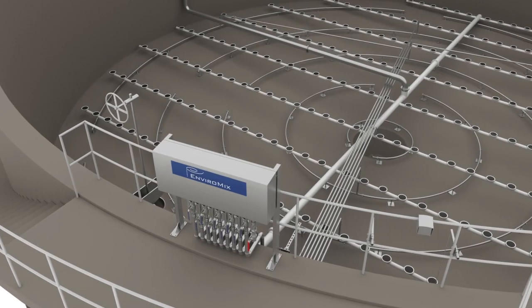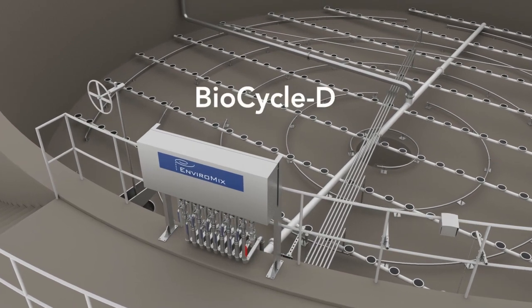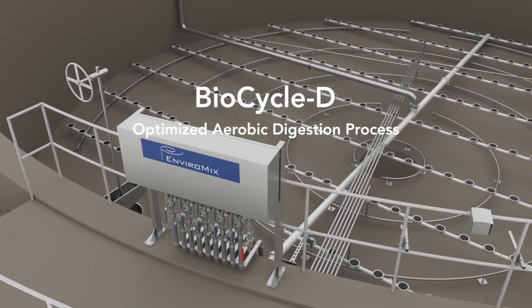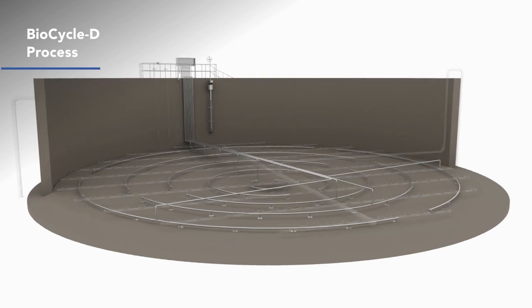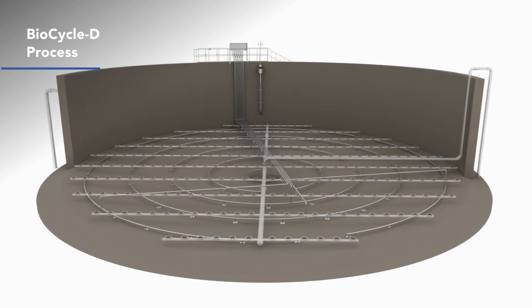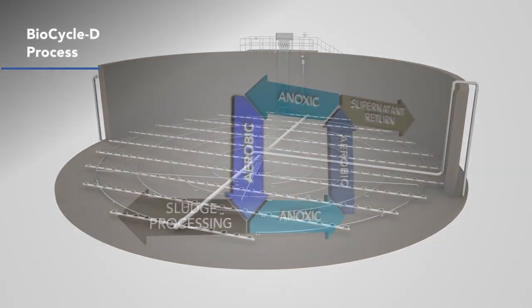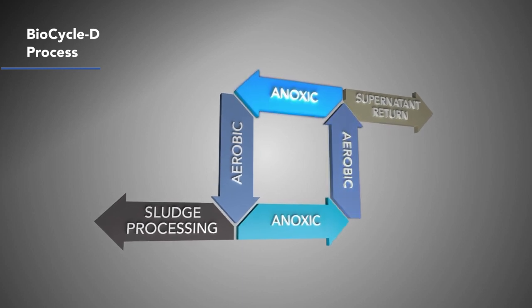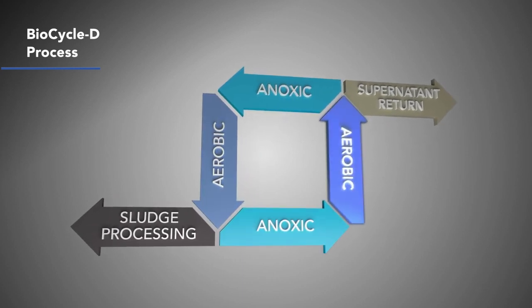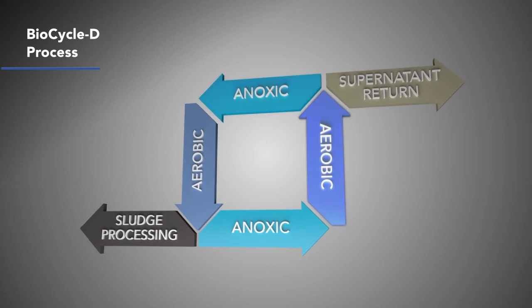The experts at EnviroMix developed the BioCycle D optimized aerobic digestion process, a reimagined sludge treatment solution. BioCycle D operates on the principle of alternating between aerobic and anoxic conditions, and using real-time data to optimize digestion and save energy.